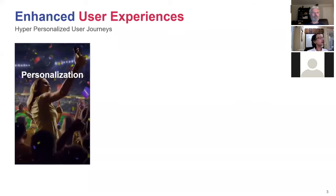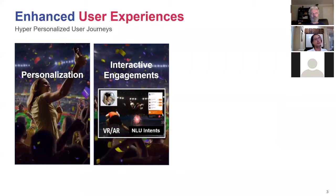What is really meant by hyper-personalized user journeys? It starts with personalization about the end user — knowing something about them. In our example, that's Megan, and things she likes, whether she's a sports fan or a concert goer, whether she likes coffee — her personal likes and preferences. That's personalization. This is where the Radisys Media Server plays a great role: the interactive engagement with that personalized content across various different verticals.